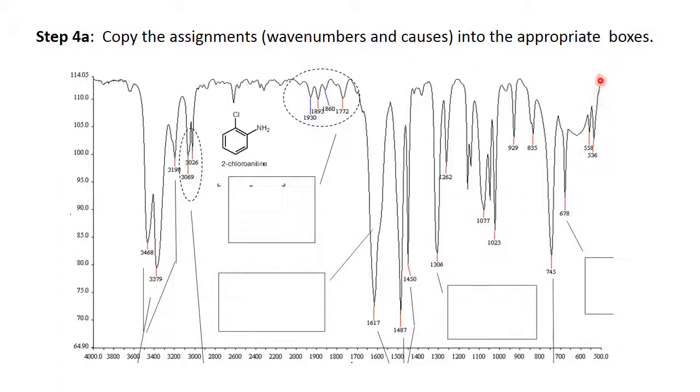Now the NH out of plane bend, recall that was between 670 and 910, is this very broad not so intense band down here. I haven't asked you to identify it but don't confuse it with one of these halogen bands or out of plane aromatic bands that we're seeing here.